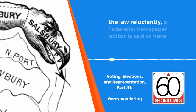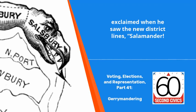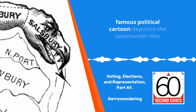a Federalist newspaper editor is said to have exclaimed when he saw the new district lines, 'Salamander, call it a gerrymander.' Elkanah Tisdale's famous political cartoon depicted the salamander-like shape of the electoral district.